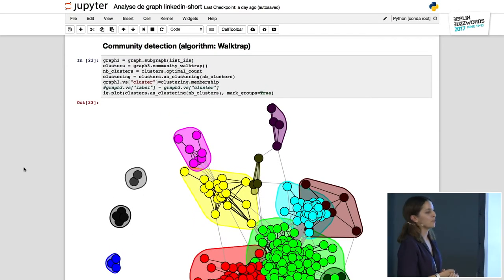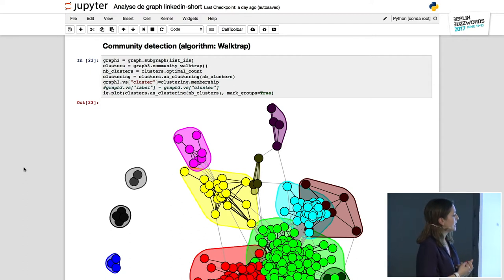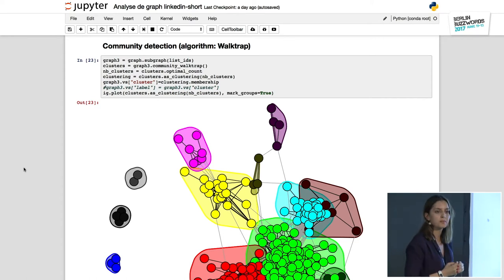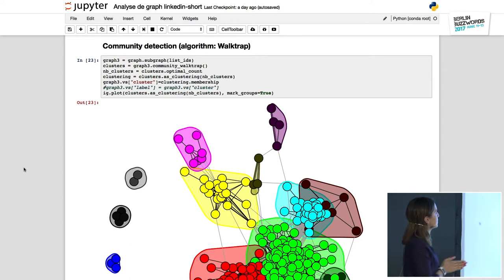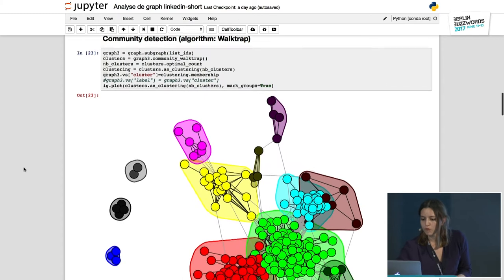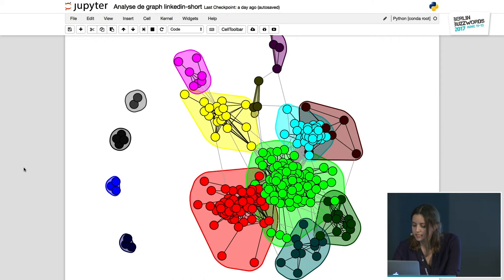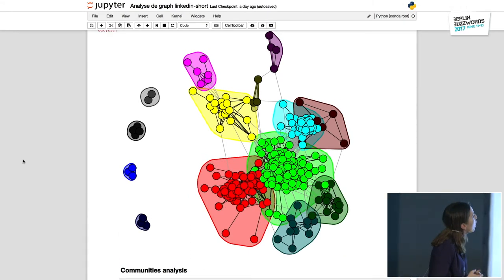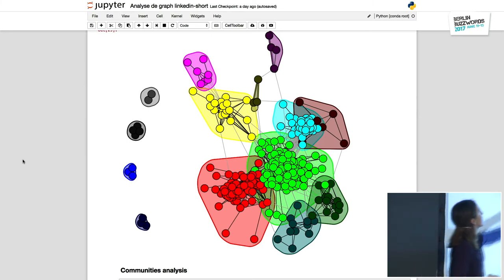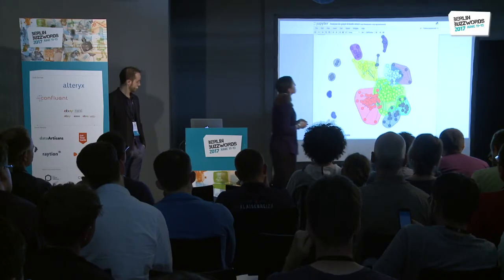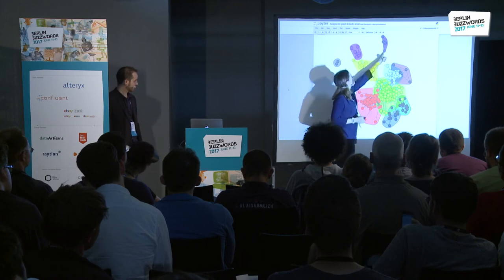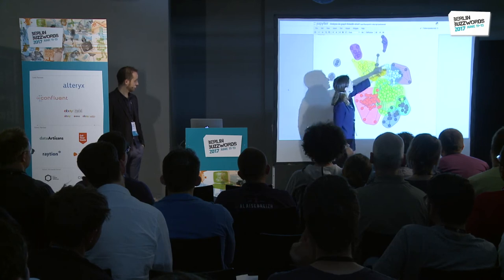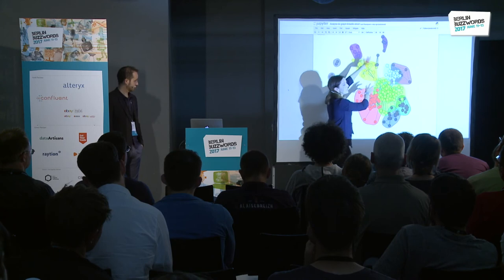Now we want to do community detection and put nice colors on the graph. There are many algorithms; we used walktrap, which is based on a random walk and uses only the network structure — not attributes like which city a person comes from. We run the algorithm and find some communities. It seems to make sense: there is a group here, another here, another here. We can also see that some persons seem to be bridges — this person here is a bridge between three communities, and if you cut those links, these communities can no longer communicate.